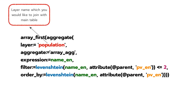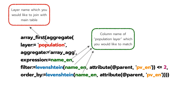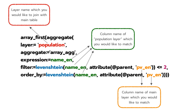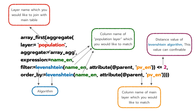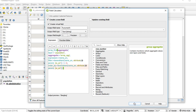Population is the table name which you want to join with the main table. Name_en is the column name of the population table. PV_en is the column name of the main table. Level 2 is the Levenshtein distance — you can adjust or configure this value. Now that you understand this code, click OK to run the fuzzy matching with the Levenshtein algorithm.